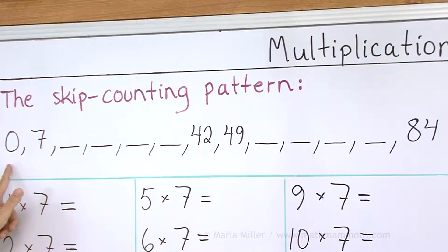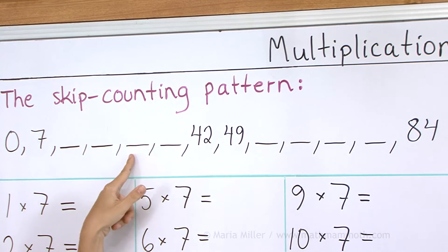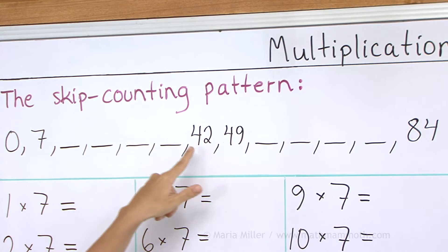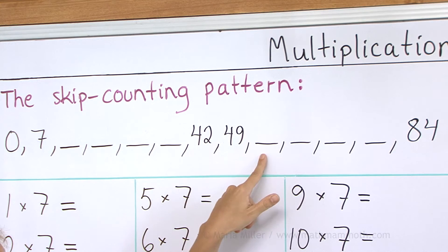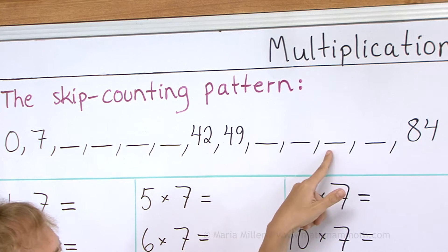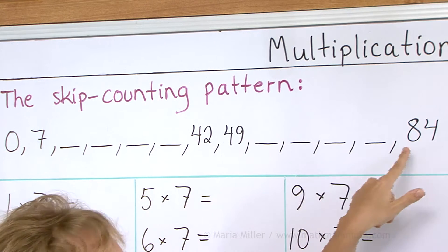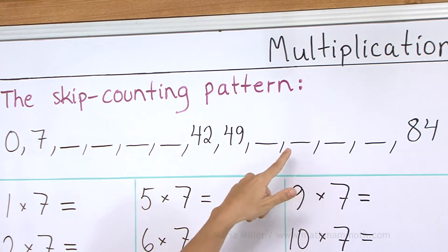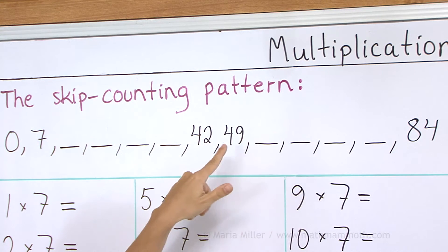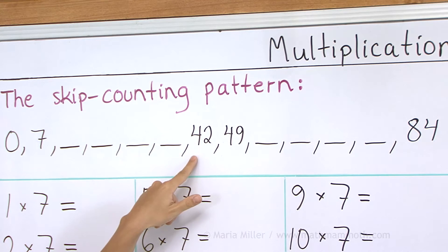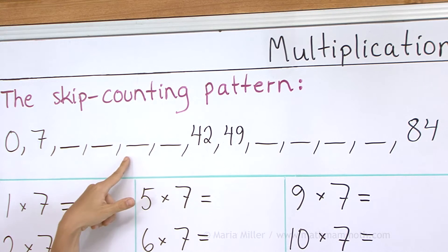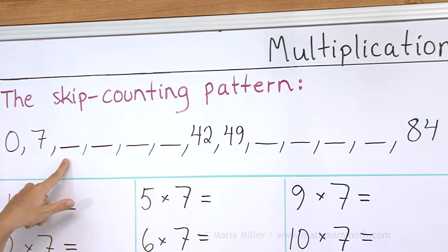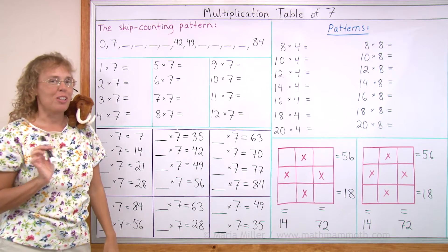And now the whole thing, 0, 7, 14, 21, 28, 35, 42, 49, 56, 63, 70, 77, 84. And then backwards, 84, 77, 70, 63, 56, 49, 42, 35, 28, 21, 14, 7 and 0. Make sure you master this part before going on, as usual.